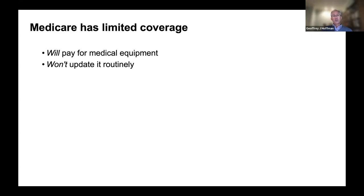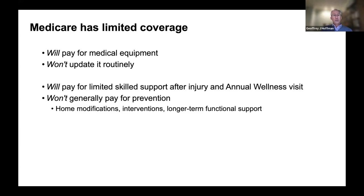If you have a fall injury, Medicare will pay for the cost once the injury has occurred and for subsequent rehabilitation. It will pay for durable medical equipment like canes and walkers, though it won't update them routinely. Medicare also has limited vision coverage when it comes to prescription eyewear. It does a limited amount of prevention at the Medicare annual wellness visit, where you can get a fall risk assessment and referral for a fall prevention intervention.